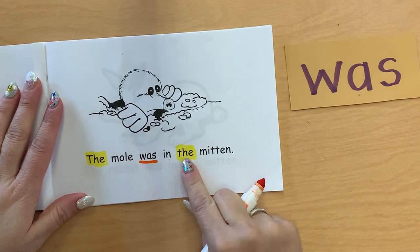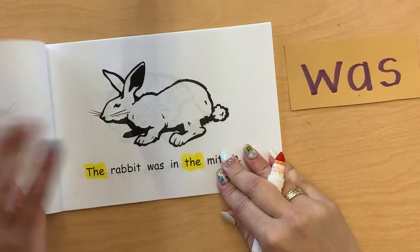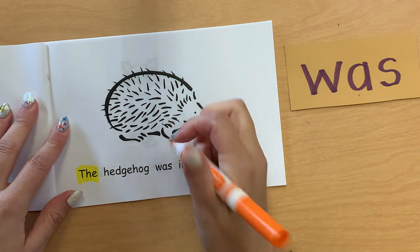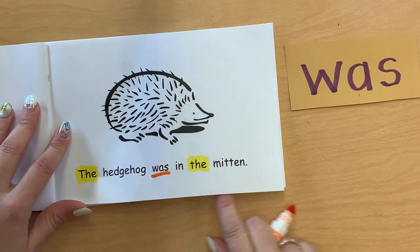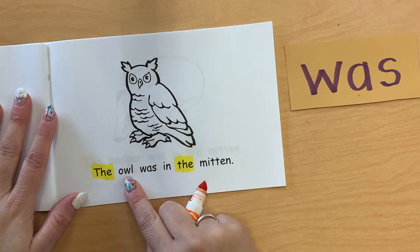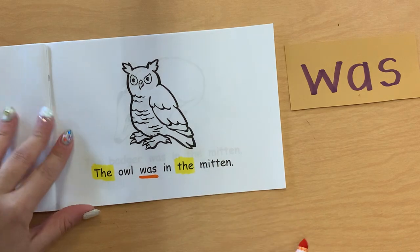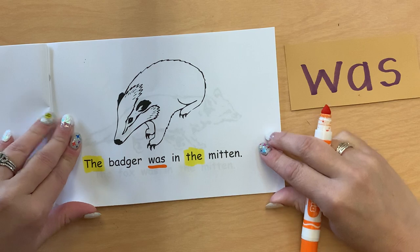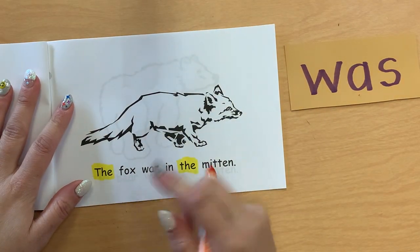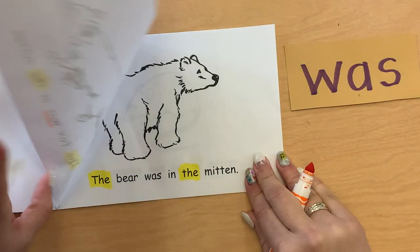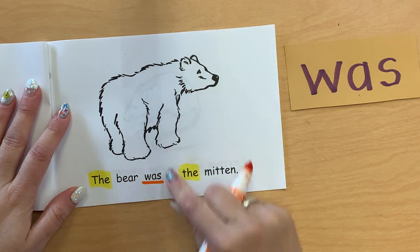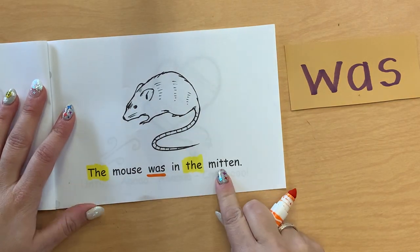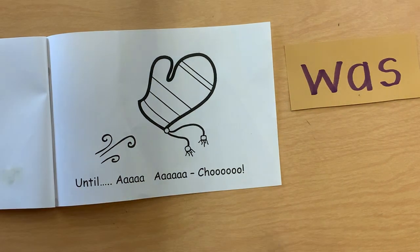The Mole was in the Mitten — easy peasy, it's only there one time. The Rabbit was in the Mitten. The Hedgehog was in the Mitten. The Owl was in the Mitten. The Badger was in the Mitten. The Fox was in the Mitten. The Bear was in the Mitten — so many animals in the Mitten. The Mouse was in the Mitten. Until — ah-a-choo — it was on the last page.